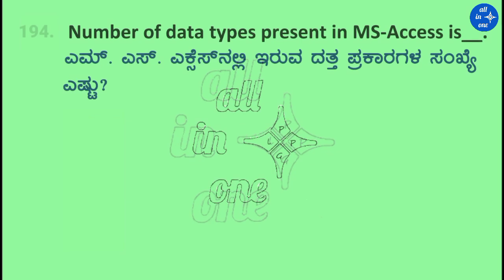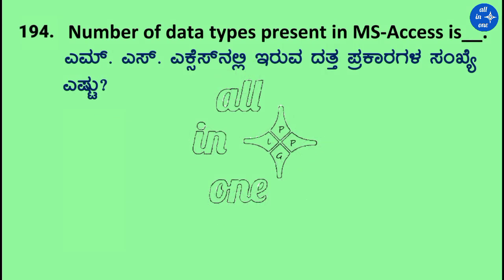Question: Number of data types present in MS Access is dash. Options: 3, 6, 7, 9. Right answer is 9.